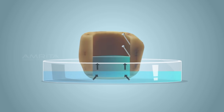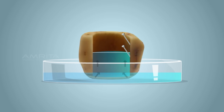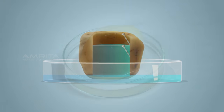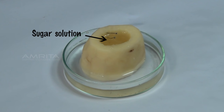Conclusion. The movement of water from the petri dish to the potato cavity occurs because of the difference in the concentration of solvent molecules in the two regions — sugar solution in the potato cavity and pure water in the petri dish.